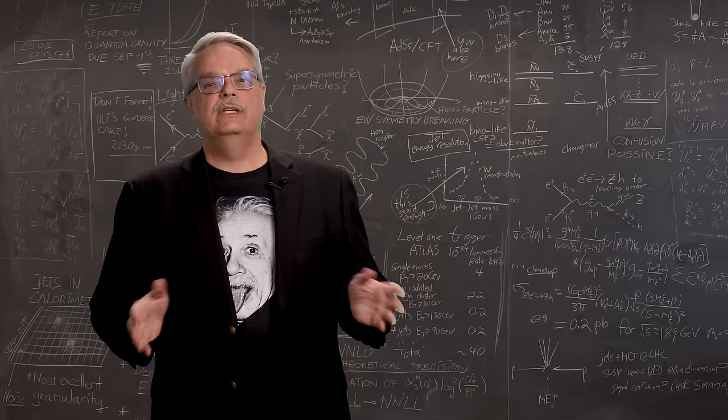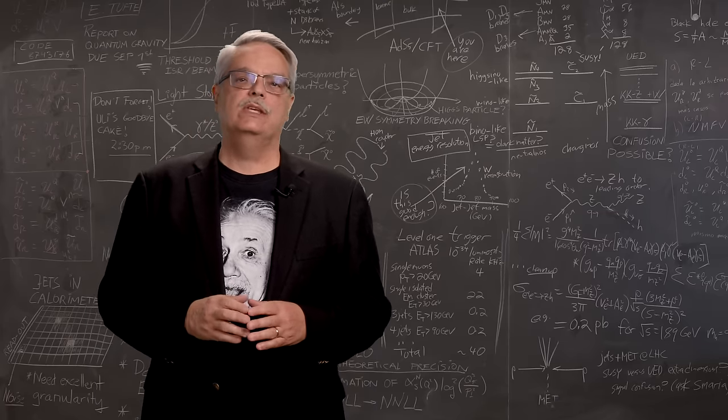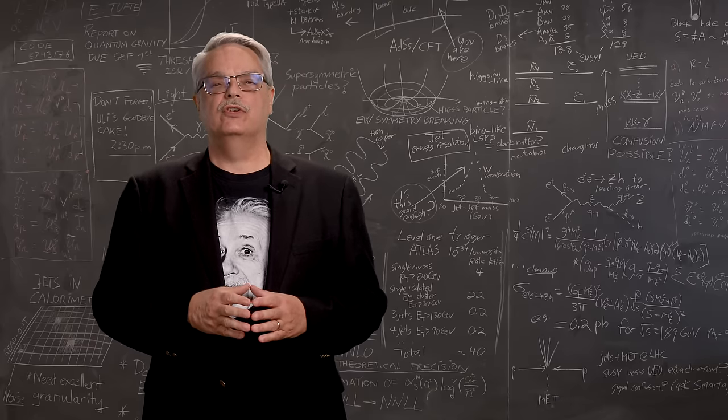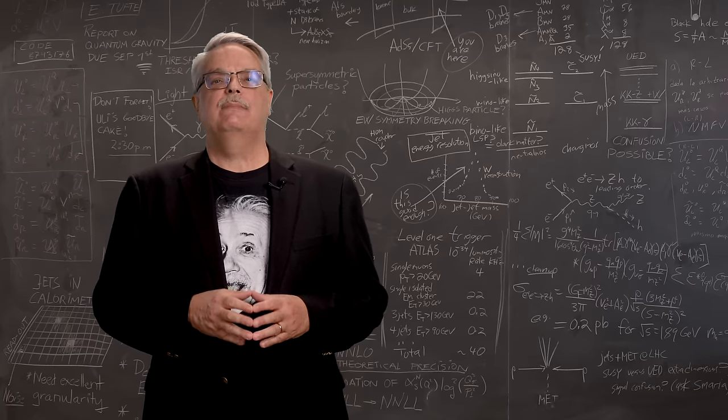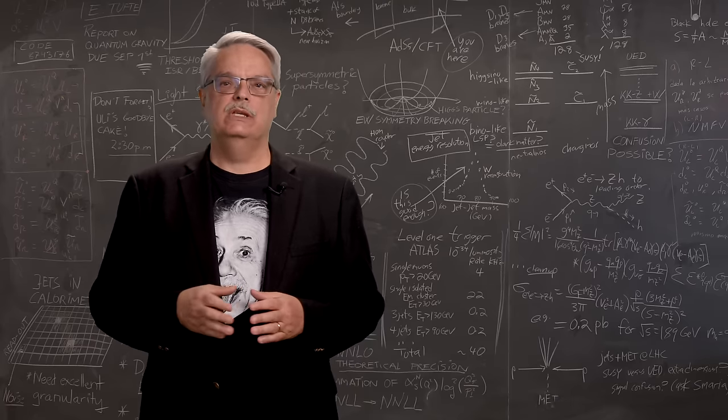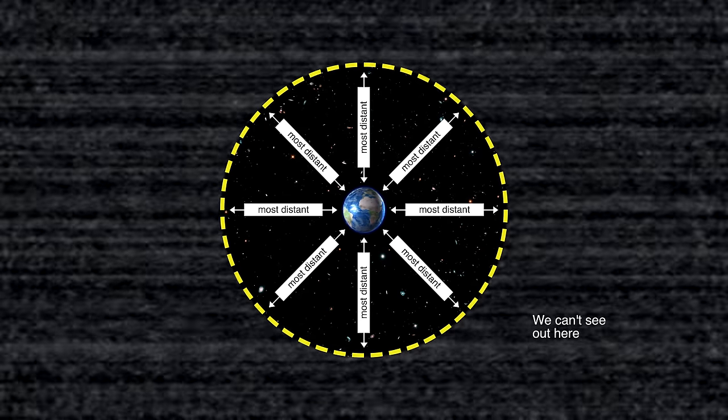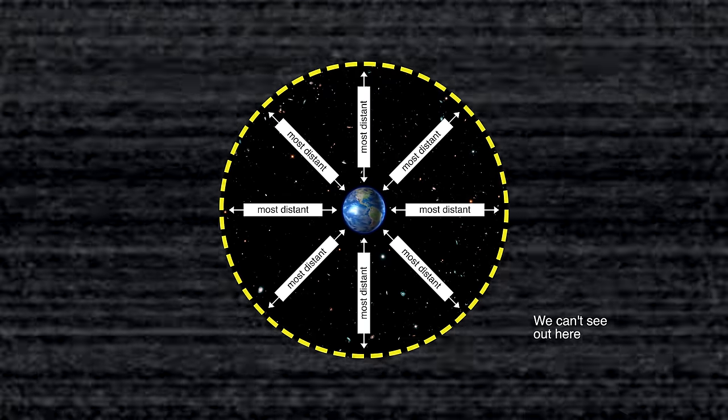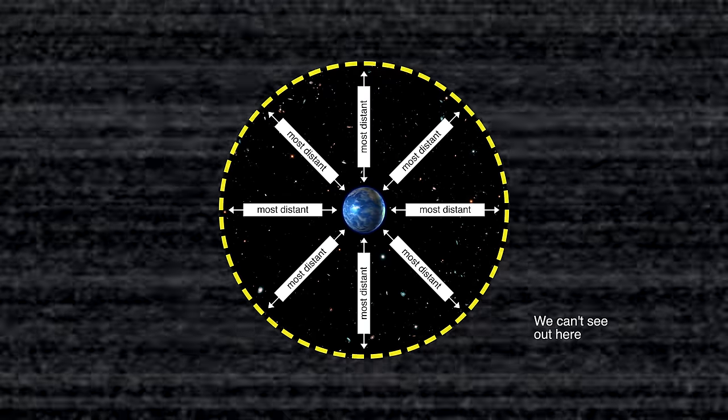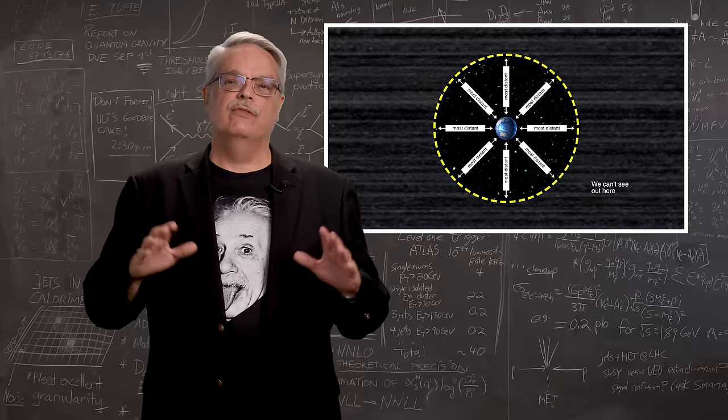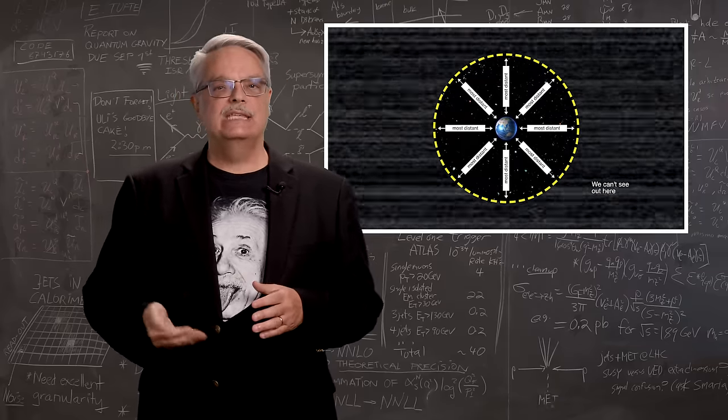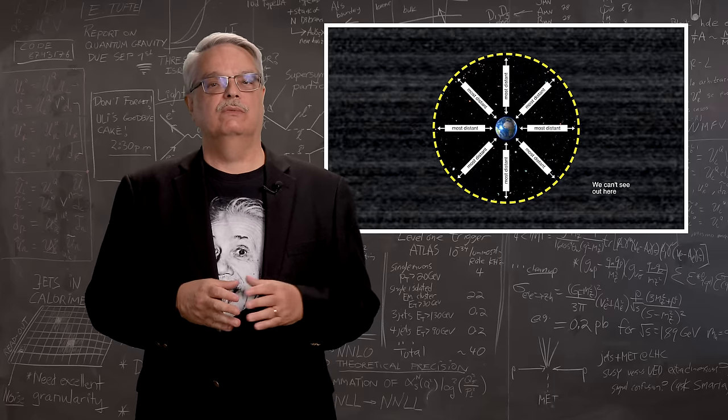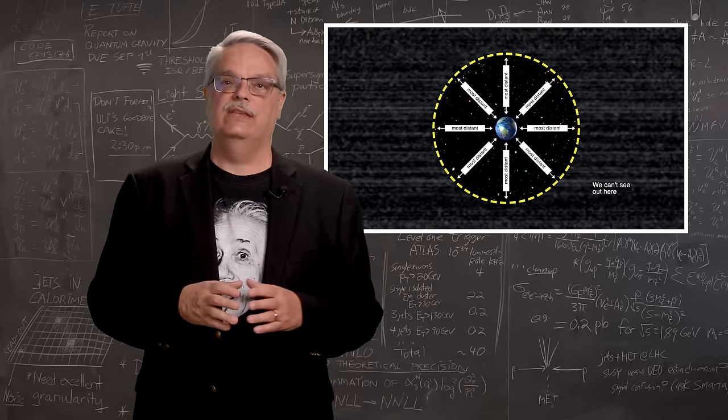We can take this idea to the extreme and ask, what is the oldest thing in the universe? And that is, by definition, the moment the universe began. That happened 13.8 billion years ago. If the universe wasn't expanding, the farthest thing we would see would be a sphere centered on the Earth with a radius of 13.8 billion light years. This is what we call the visible universe. Inside that sphere, light has had time to get to us. Outside the sphere, it hasn't. We can't see anything outside that sphere.